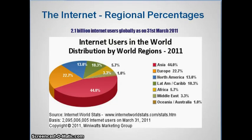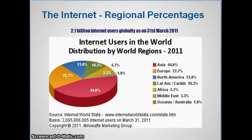Looking at the same figures in terms of percentages of the pie: Asia accounts for 44% of the total number of internet users globally, followed by Europe with about 23% and North America with 13%.